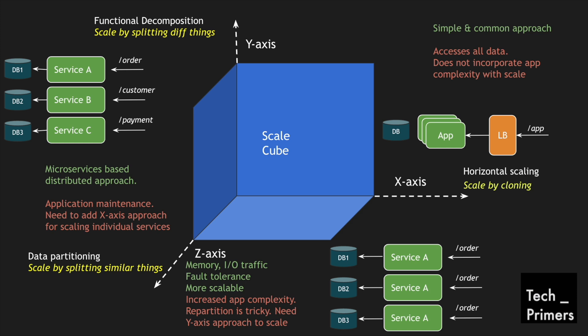To summarize: the scale cube defines different approaches for creating scalable systems. The first is horizontal scaling — a simple approach of cloning an application instance into multiple instances backed by a load balancer, which distributes traffic to individual instances that connect to a single data source. This is the most common approach, and we call it horizontal scaling or scale by cloning.